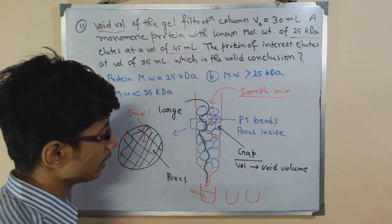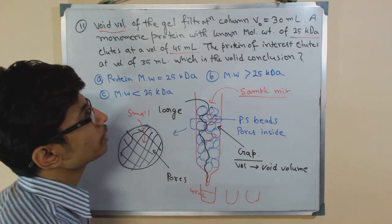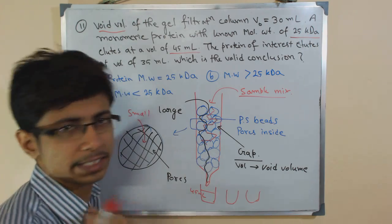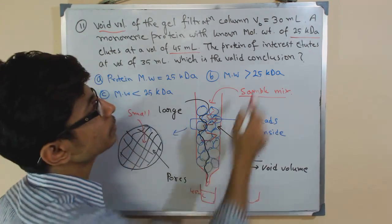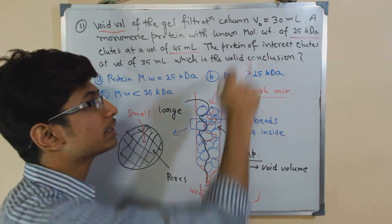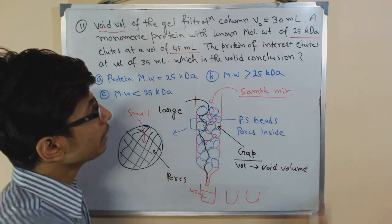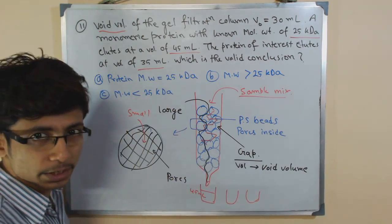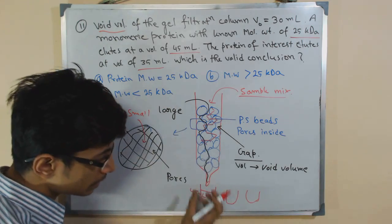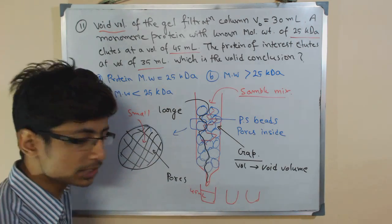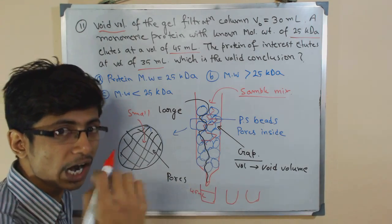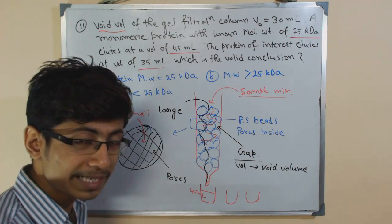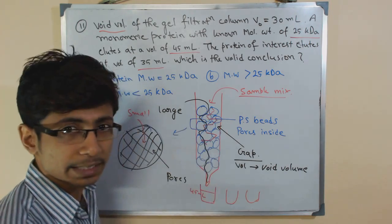We don't know what the molecular weight of our protein of interest is - that's what we need to find. But we get some idea compared to the known protein which has molecular weight of 25 kD. They told us that our protein of interest eludes at 35 milliliters. That means our protein of interest will come earlier than the known protein.